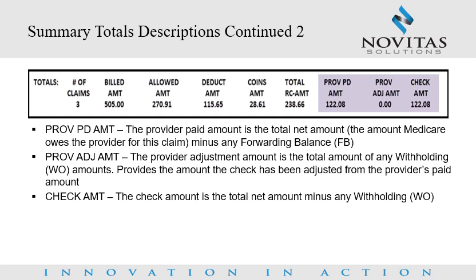Summary totals descriptions continued. The summary totals section also displays the following fields. Provider paid amount is the total net amount Medicare owes the provider for this claim, minus any forwarding balance, or FB. Provider adjusted amount is the total amount of any withholding amounts, reflected with a WO; this amount provides the amount the check has been adjusted from the provider's paid amount. Lastly, check amount is the total net amount minus any withholdings, reflected by a WO.